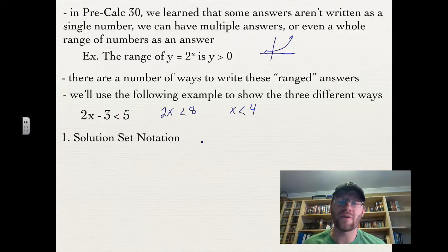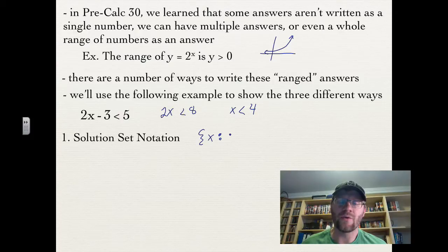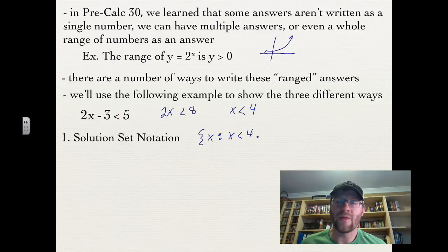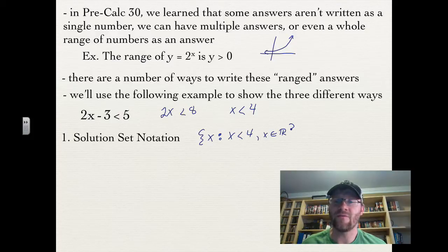The first way is solution set notation. Solution set notation always uses squiggly brackets. We would say x colon — just to indicate the variable — and then write x is less than 4. In some cases, you might even note that x is all the real numbers that happen to be less than 4.